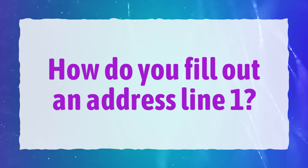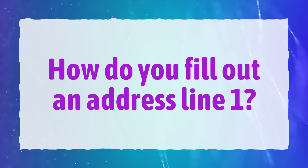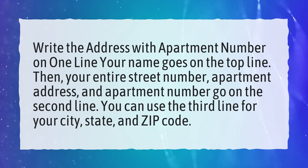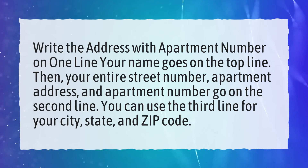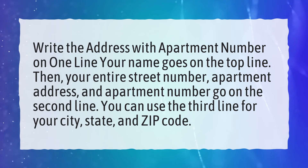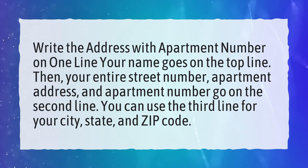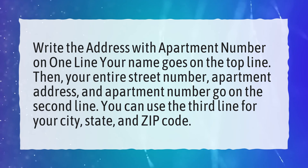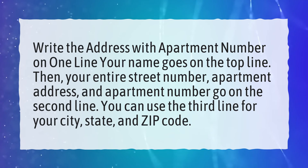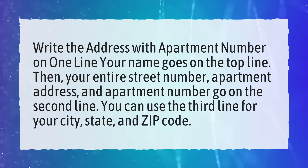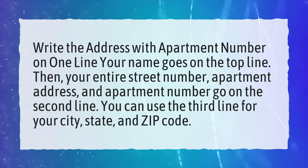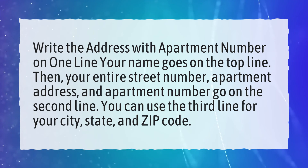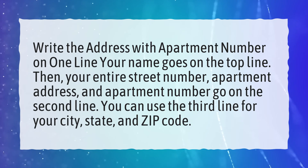Address Line 1 — how do you fill it out? Write the address with apartment number on one line; your name goes on the top line. Then your entire street number, apartment address, and apartment number go on the second line. You can use the third line for your city, state, and zip code.